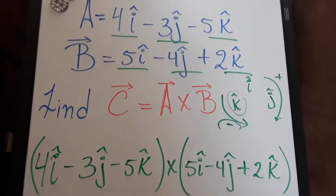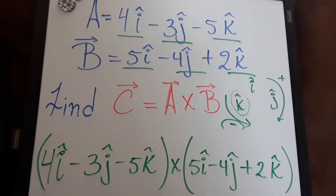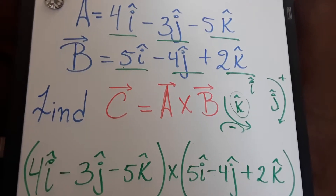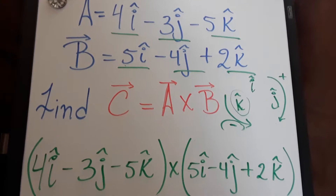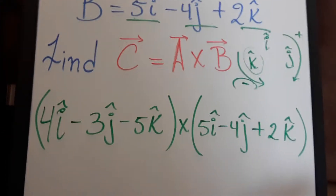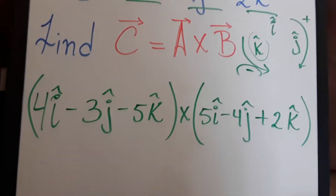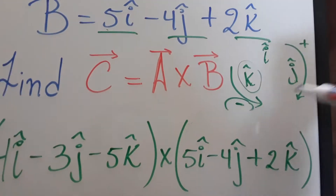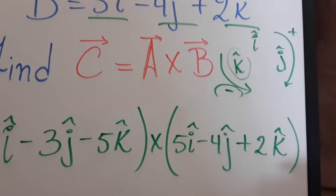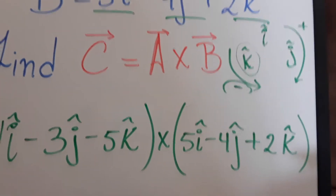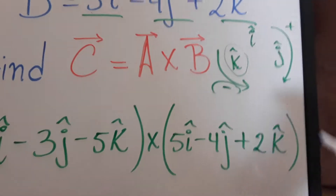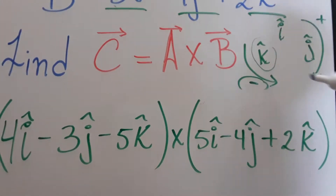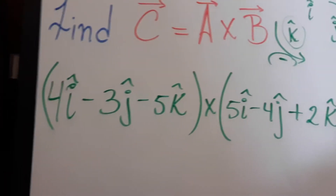Hi guys, so this is just the second part of the cross product. I just wrote it down here, and up here I wrote the mnemonic so that you guys can remember whether it's a positive or a negative faster.